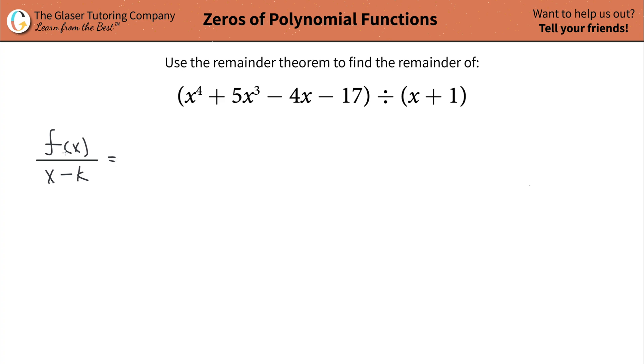what this remainder theorem says is that if you have this setup where you have some function f of x, which this whole thing could be considered f of x, it's being divided by some linear function, which this thing can be considered a linear function because the power of x is one. Then the remainder will be equal to the remainder of this division will be equal to f of k.